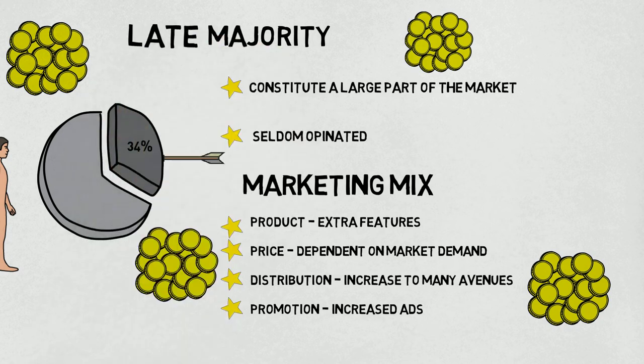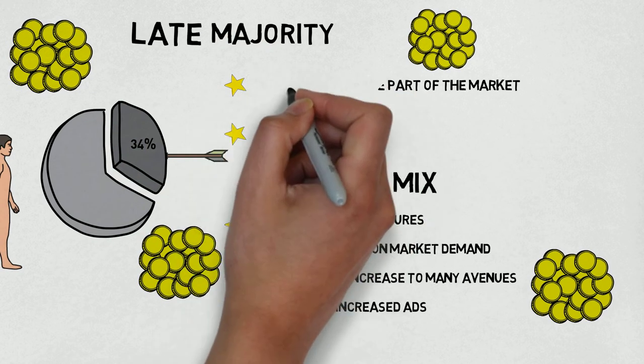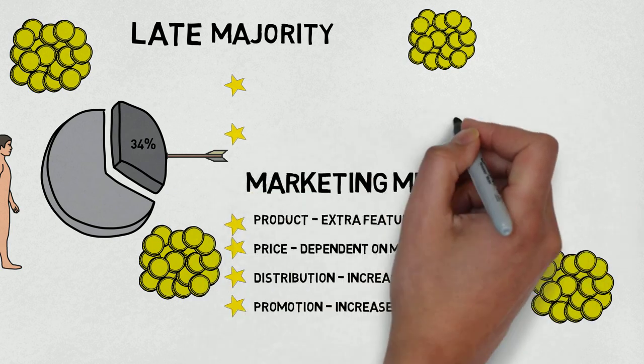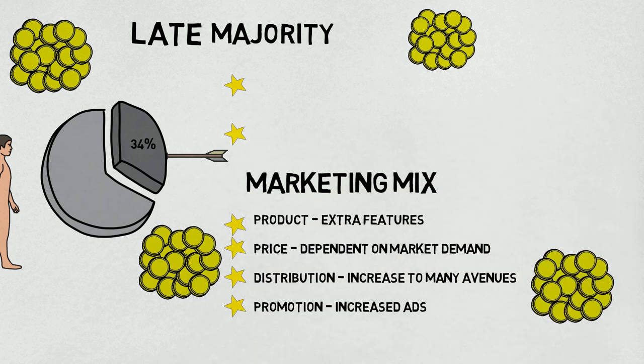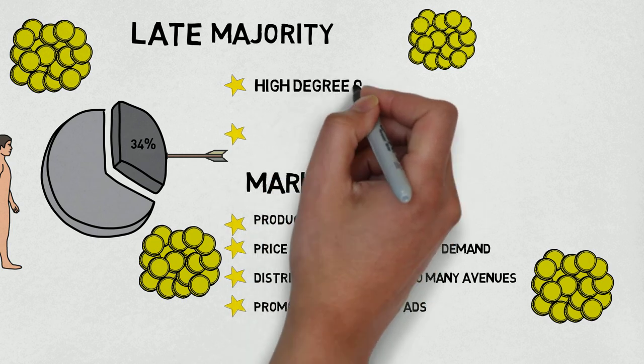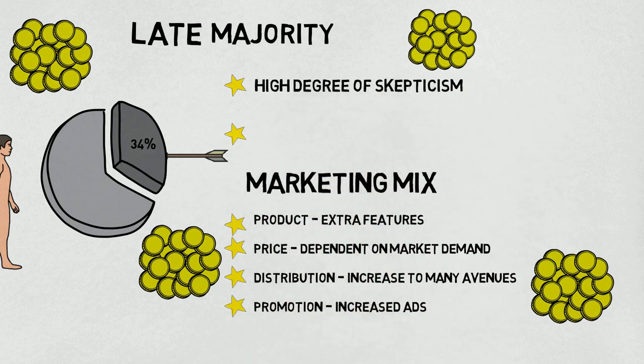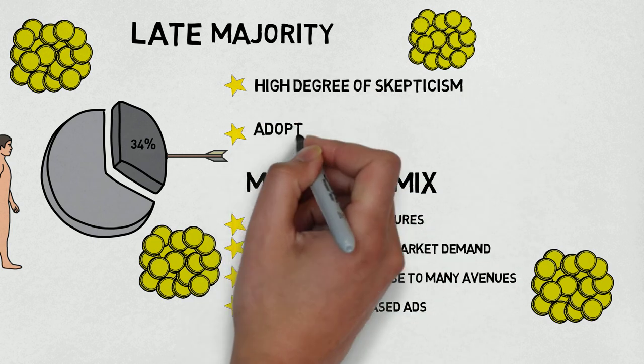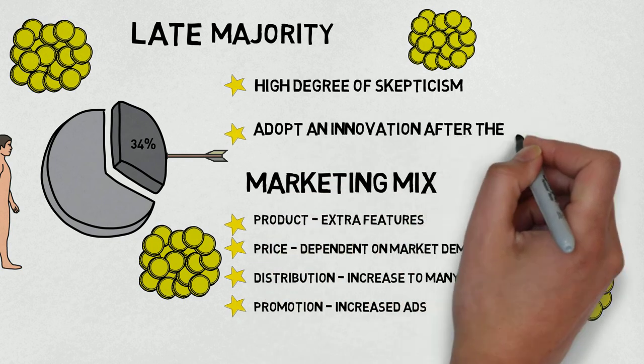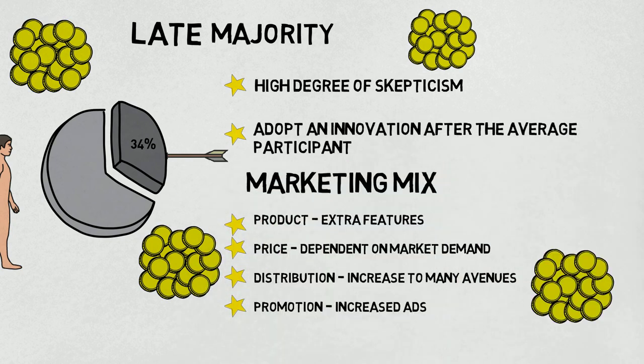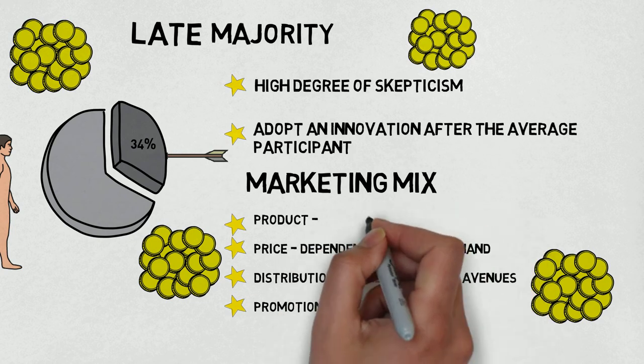Within the maturity phase, another set of adopters that constitute to another 34% of the category would be the late majority. This group adopted innovation after the average participant. These individuals approach an innovation with a high degree of skepticism and after the majority of the society has adopted the innovation.